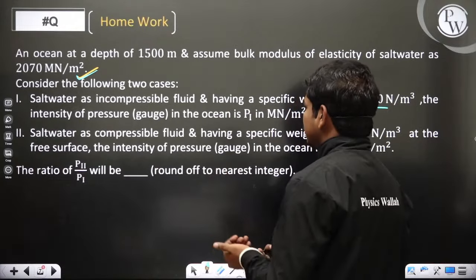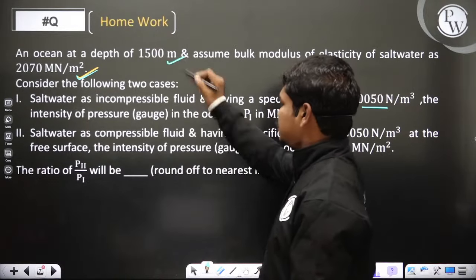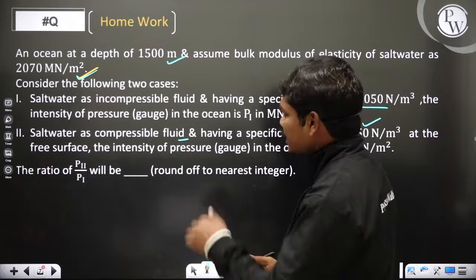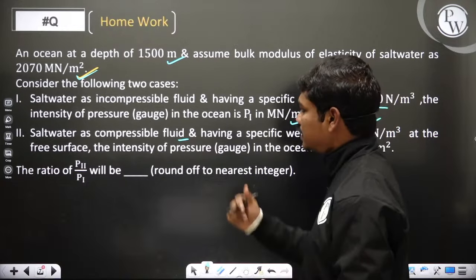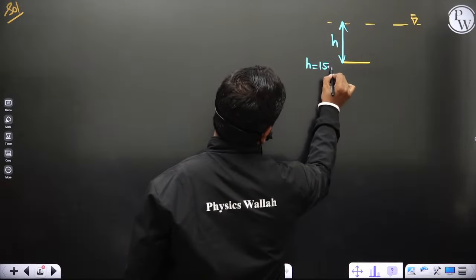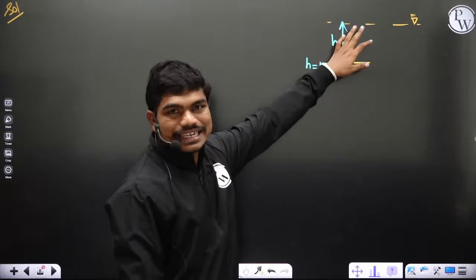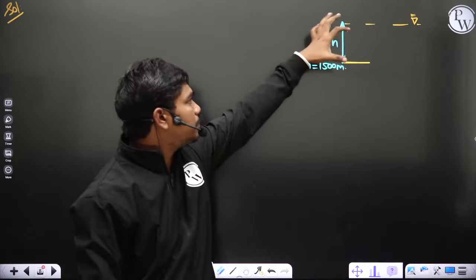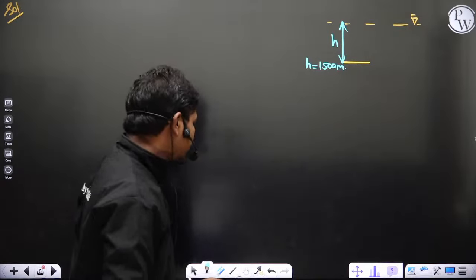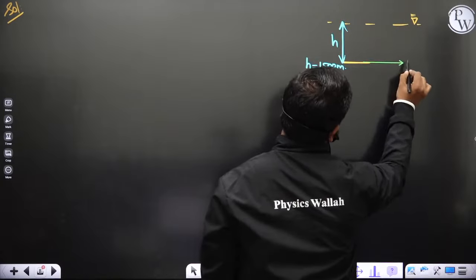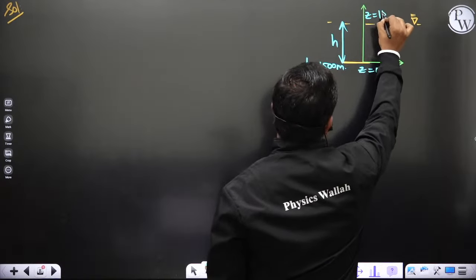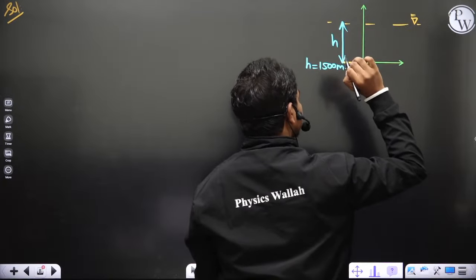Two cases are considered: Case 1 - salt water as incompressible fluid with specific weight 10,050 N/m³; find gauge pressure p1 in MN/m² at 1500 m depth. Case 2 - salt water as compressible fluid with specific weight 10,050 N/m³ at the free surface; find gauge pressure p2. Then find the ratio p2/p1. We set up a coordinate system with z in the downward direction, so z = 0 at the free surface and z = 1500 m at depth.